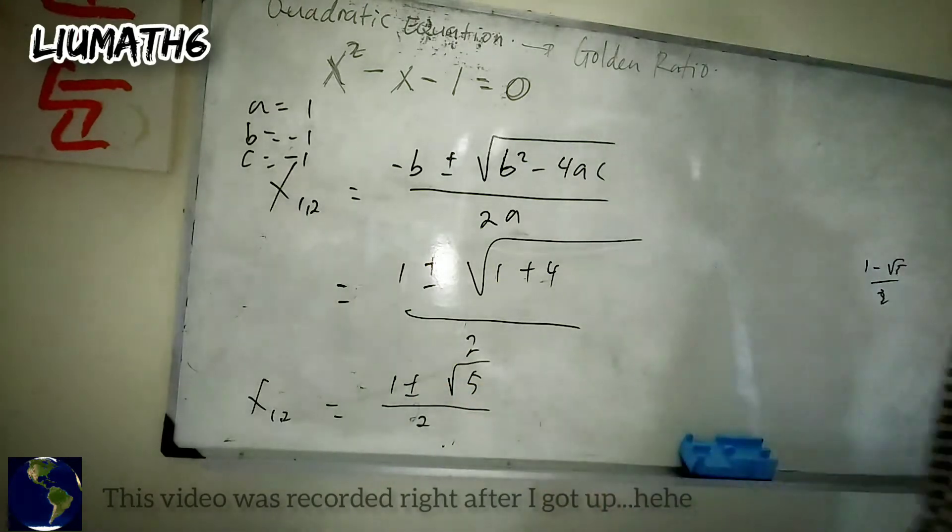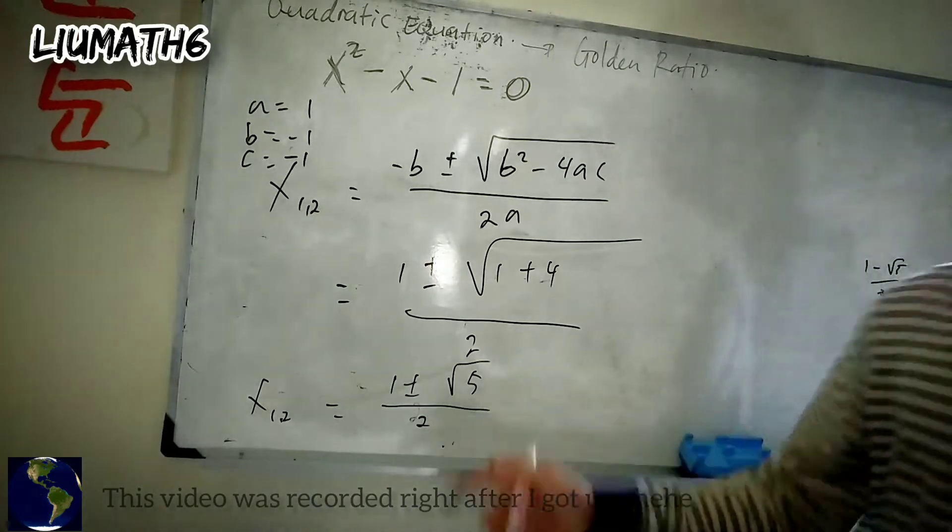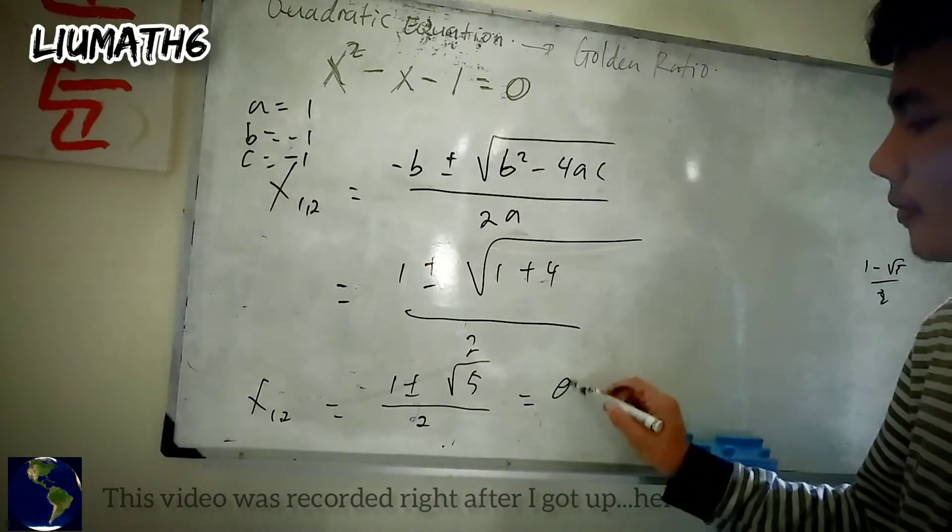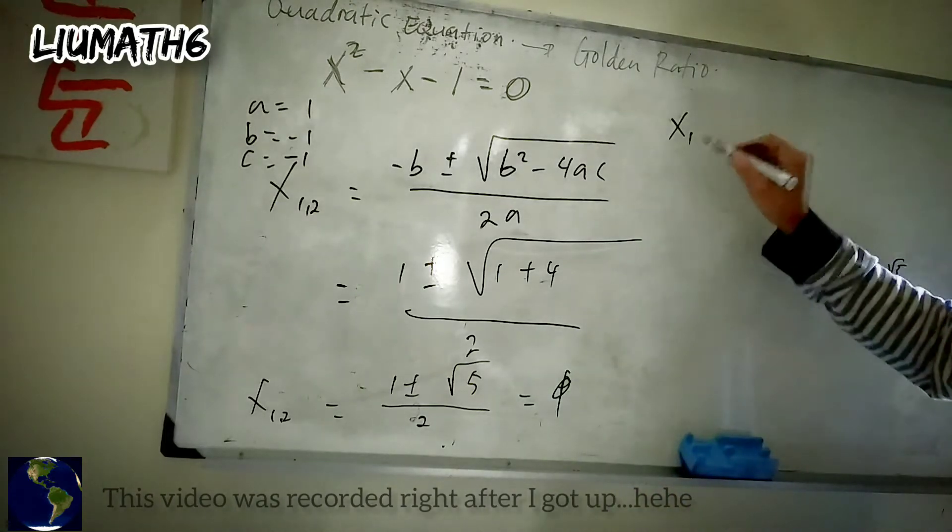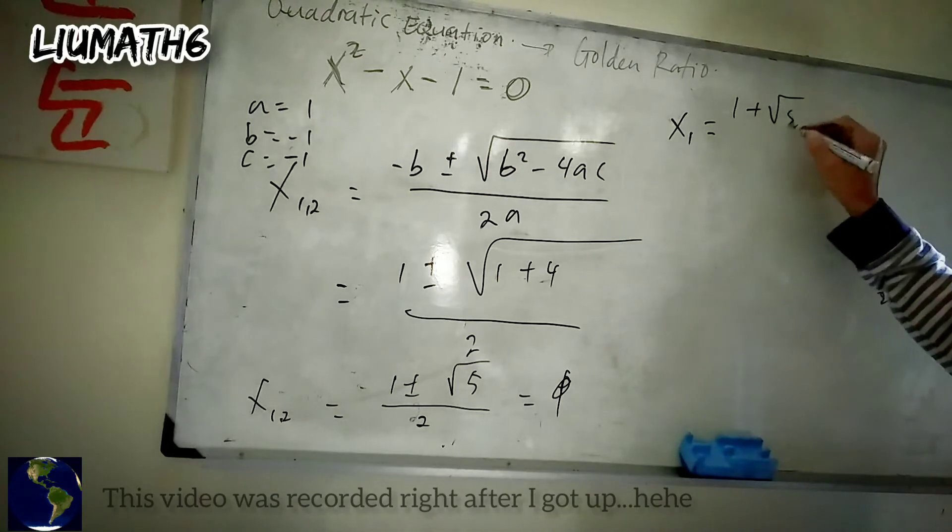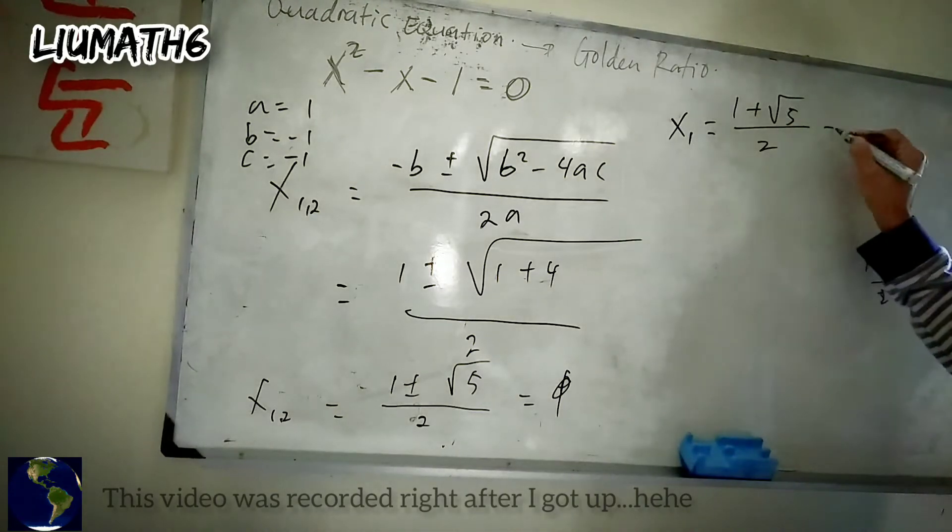And if you see this, this is the same as the golden ratio. Okay, so let's say x1 equals—let's take the positive—1 plus the square root of 5, all over 2. And this is the golden ratio, which is the value for golden ratio.